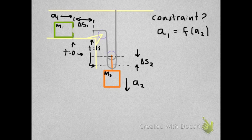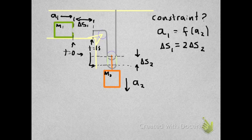Once again, the horizontal part of the string lost an amount delta S1 during that time. It must equal the amount that the vertical part of the string gained during that same amount of time, which is clearly 2 times delta S2.